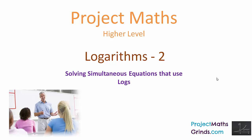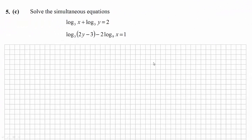In this question we will look at solving simultaneous equations that use logarithms. The two equations given are: log of x to the base 3 plus log of y to the base 3 equals 2, and log of 2y minus 3 to the base 3 minus 2 times the log of x to the base 9 equals 1.